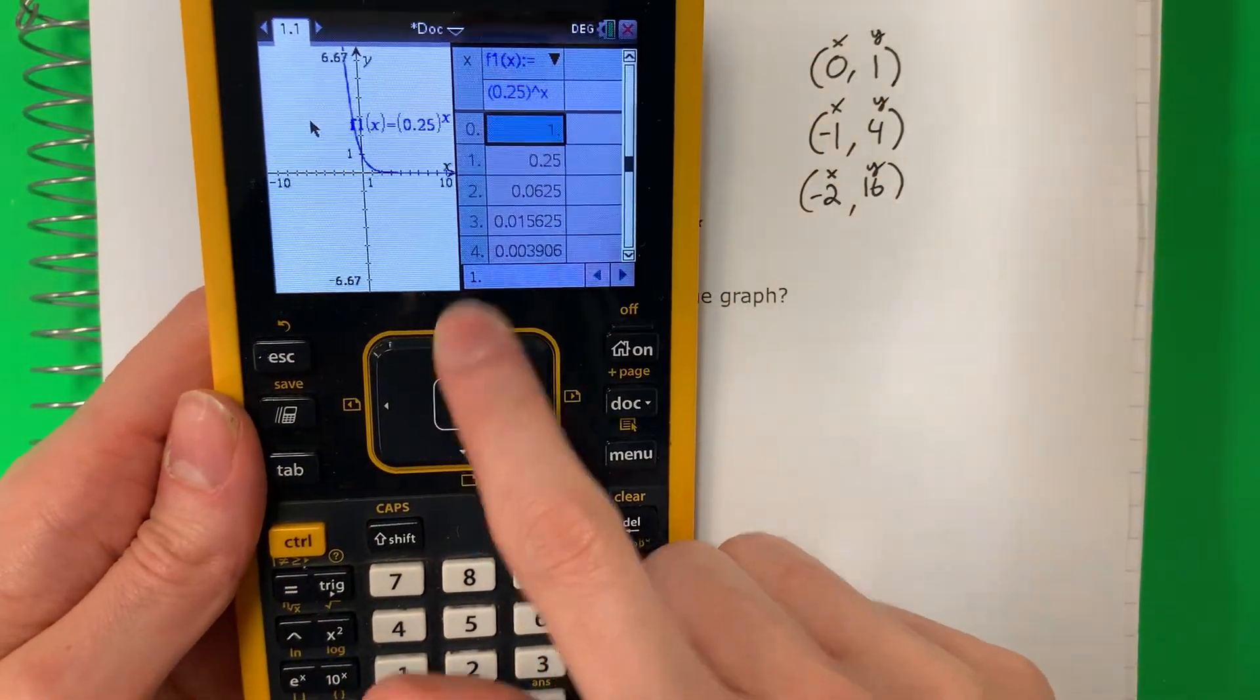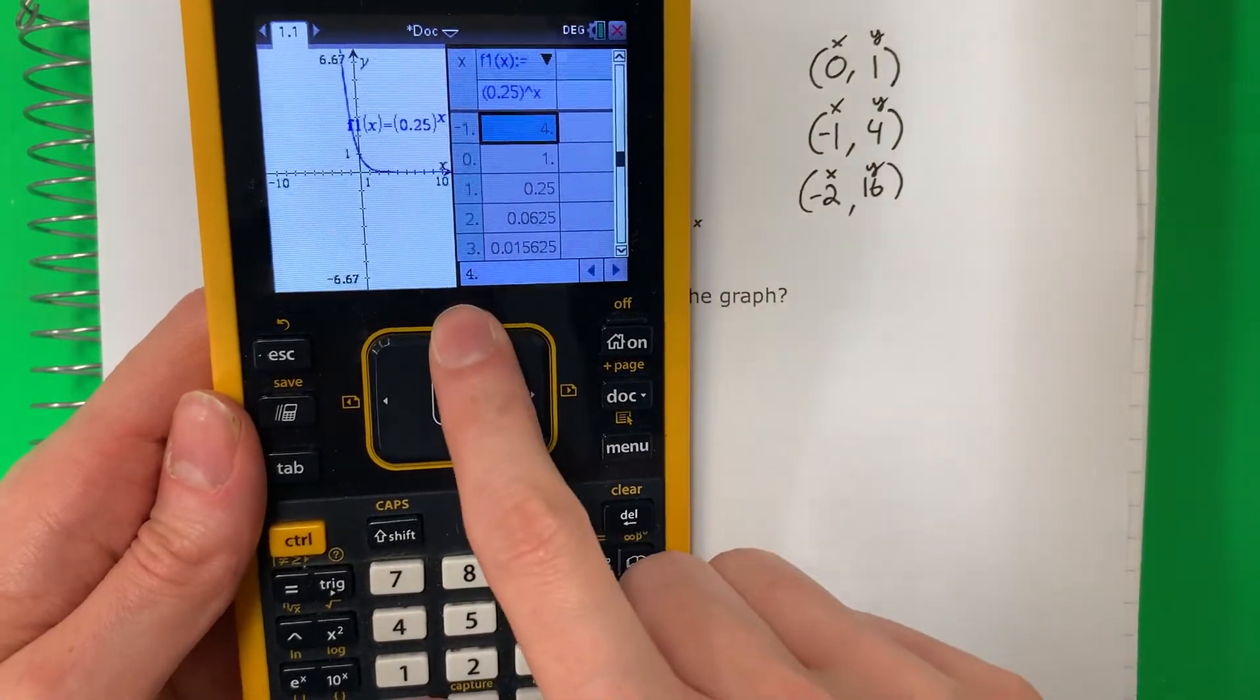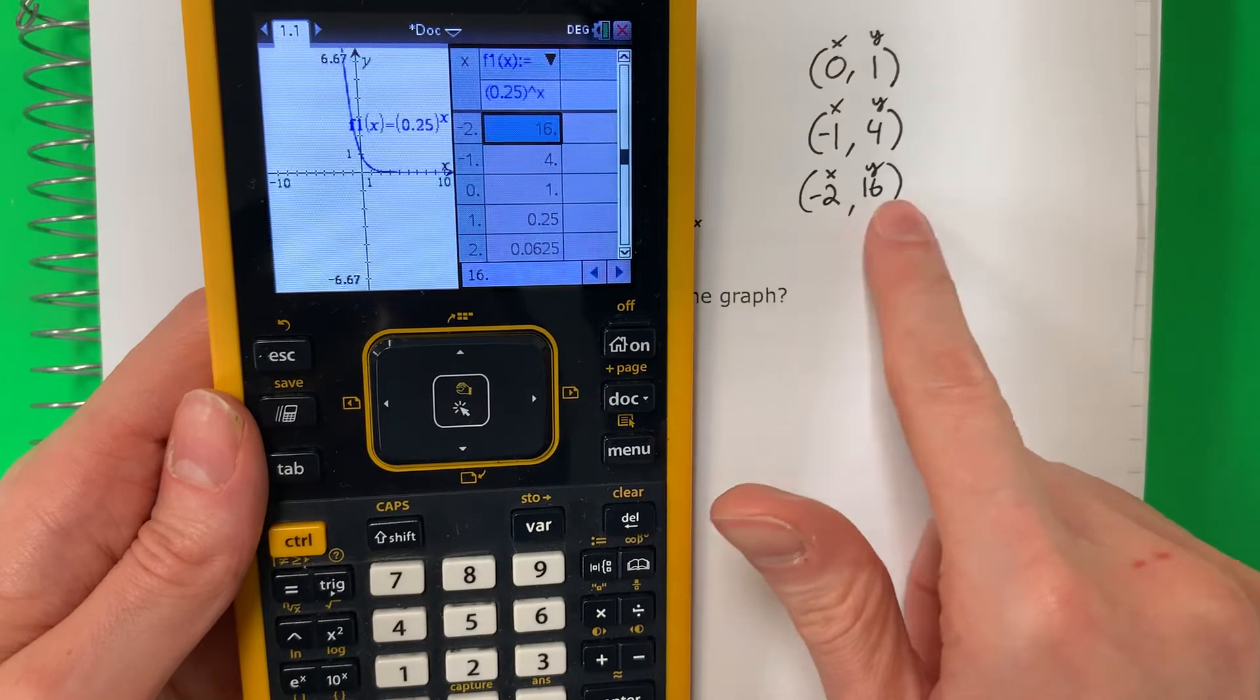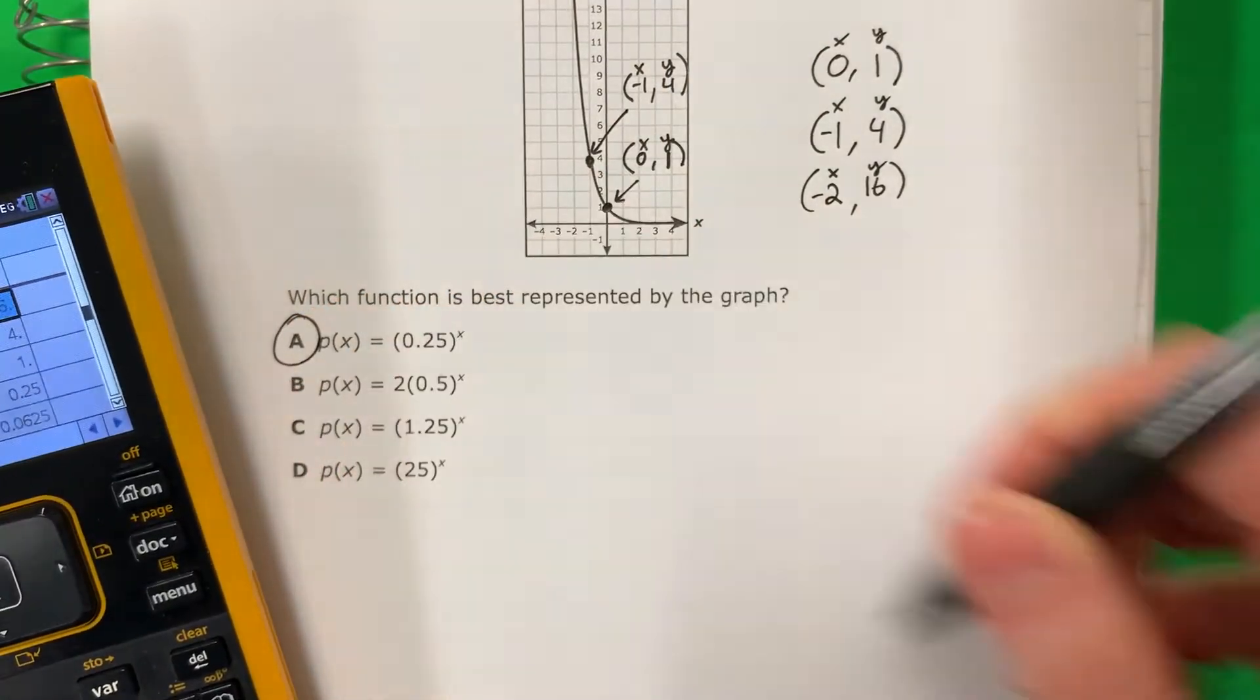Let's check the points. Zero, one. Go up. Zero, one. Good. Go up. Negative one, four. Good. Up. Negative two, sixteen. So these are all correct. My answer is A.